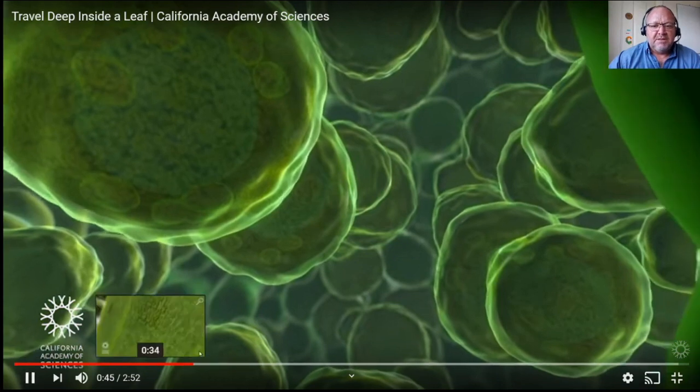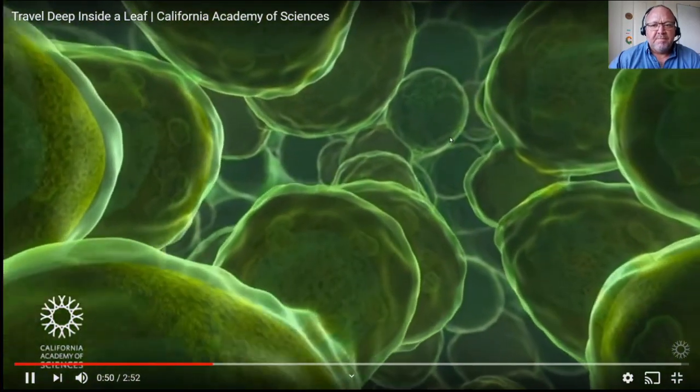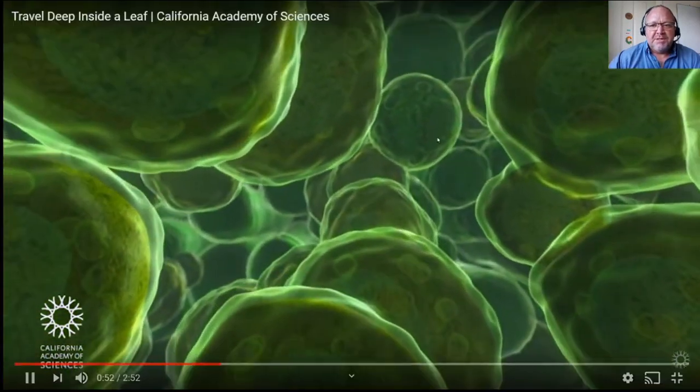You will see that there's lots of space in here and that is to allow the oxygen to diffuse out because it's a byproduct of photosynthesis and the carbon dioxide to diffuse in so that it can be used during photosynthesis. So look at all the spaces. We're still traveling in the spongy mesophyll, sorry that was a bad pronunciation.